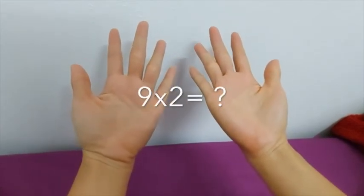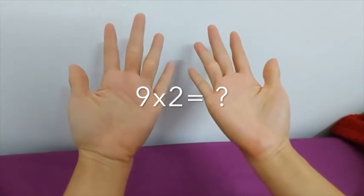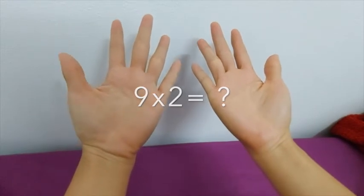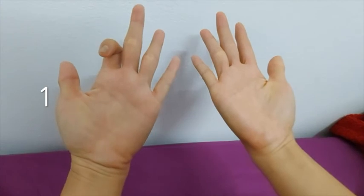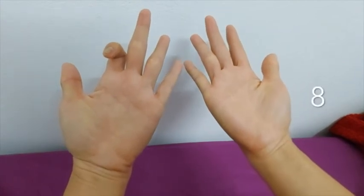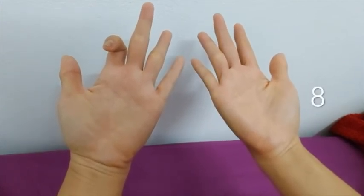Let's try it together one more time. Let's say the question is nine times two, so you want to count one, two. And then now you have one finger before that and eight fingers after that, so the answer is 18.